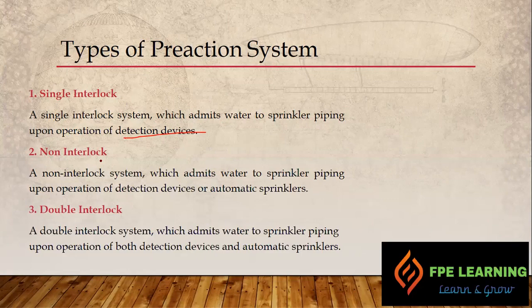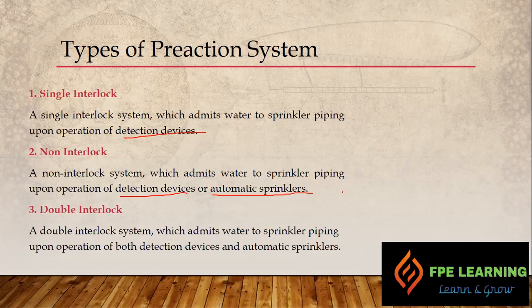In a non-interlock system, water is admitted to sprinkler piping upon operation of a detection device or an automatic sprinkler. There are two arrangements to open the deluge valve: a solenoid valve, and a pneumatic actuator. The pneumatic actuator detects fire through a pilot line using heat detectors — a pilot-type head fuses and releases air. Once air is released, the system activates due to the pressure drop in the priming chamber.